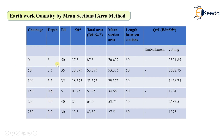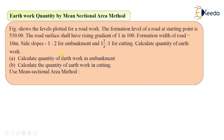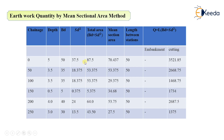Now for B×D: formation width B is 10 meters and is constant. So at 0 m: 5×10 = 50; at 50 m: 3.5×10 = 35; at 100 m: 3.5×10 = 35; 0.5×10 = 5; 4×10 = 40; and 3×10 = 30. These give us all the B×D values.